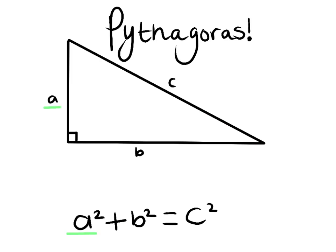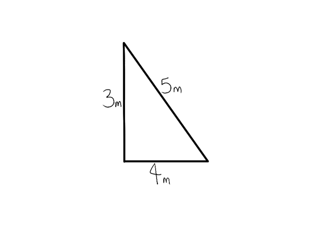The Pythagorean theorem is simply a squared plus b squared equals c squared, and is worked out if the hypotenuse is the value of the sum of the squares of the two other lengths. For example, if a triangle has lengths of 3, 4 and 5,